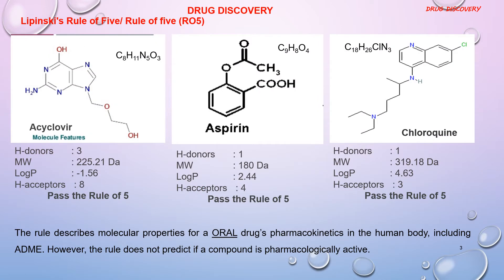Let's consider some examples. The first is Acyclovir, an antiviral drug used to slow down the spread of herpes virus. It is a synthetic analogue of guanosine. In this structure, the number of OH groups in the molecule is 2 and the number of NH groups is 1. Therefore, the total hydrogen bond donors for the molecule is 2 plus 1, which equals 3.